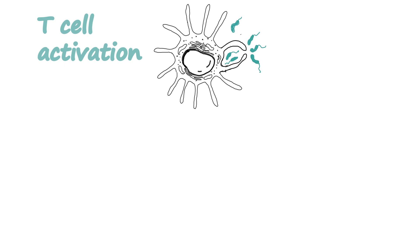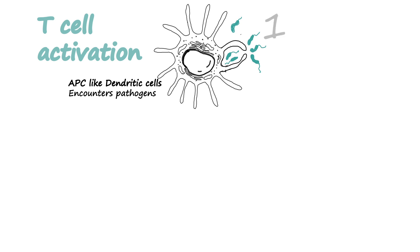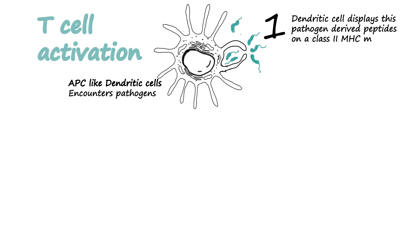One of the key players that helps in T cell activation is the antigen presenting cell — for example, the dendritic cell. In this case, the dendritic cell has engulfed some pathogens, such as bacteria, and now this dendritic cell would display some of those peptides onto class 2 MHC molecules.